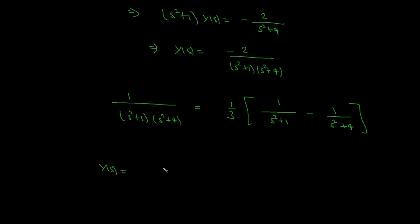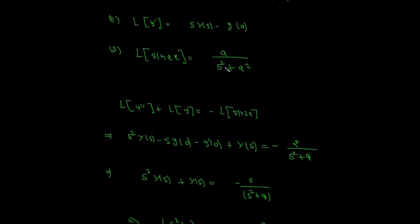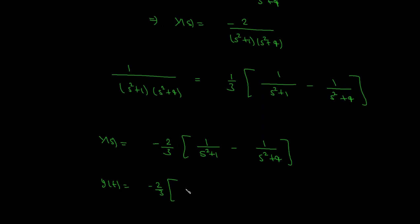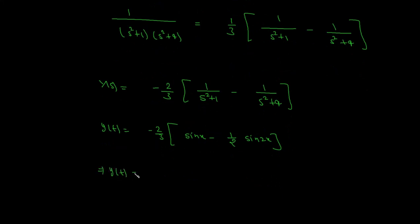So Y(s) equals negative 2 over (s squared plus 1)(s squared plus 4). Now we take the inverse Laplace transform. Using the formula, the inverse Laplace transform of 1 over s squared plus 4 equals one half sin(2x). From this we obtain y(x) equals one third sin(2x) minus two thirds sin(x).